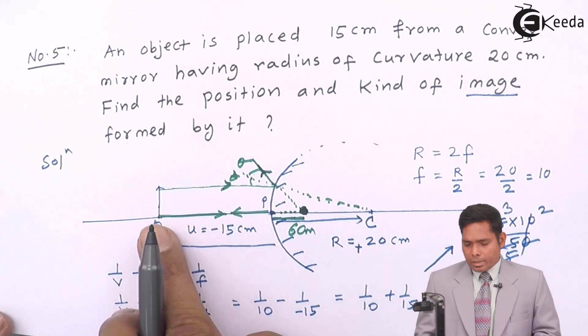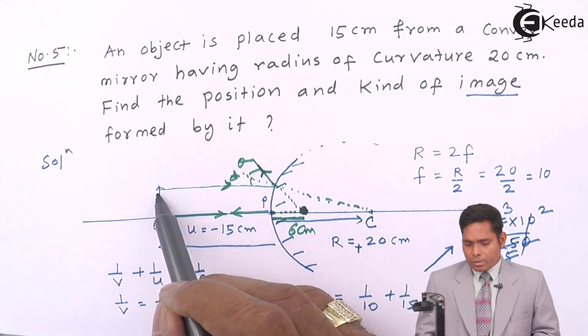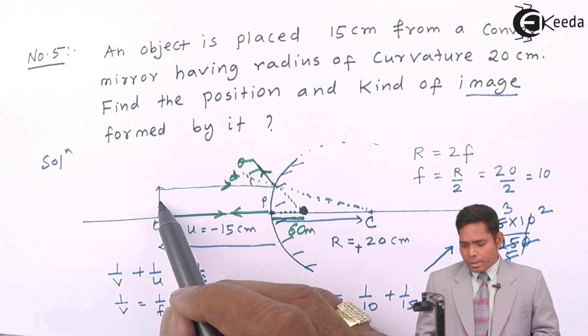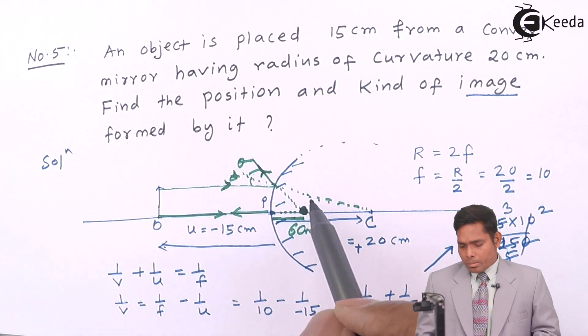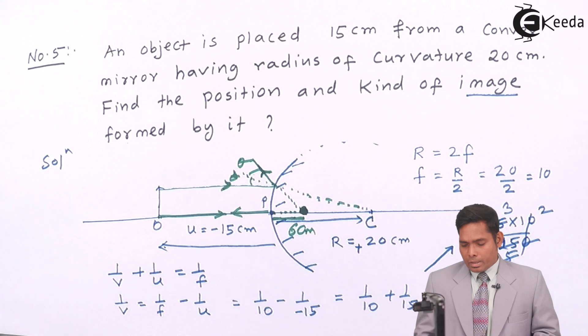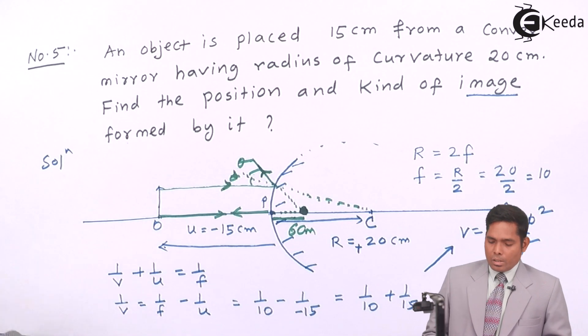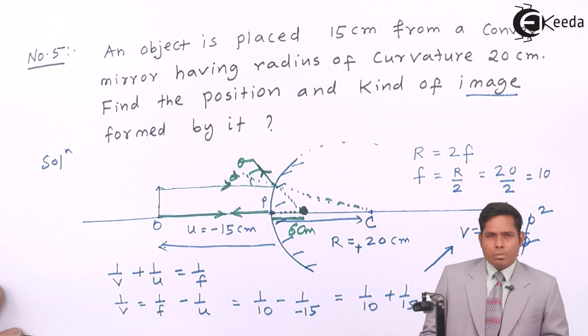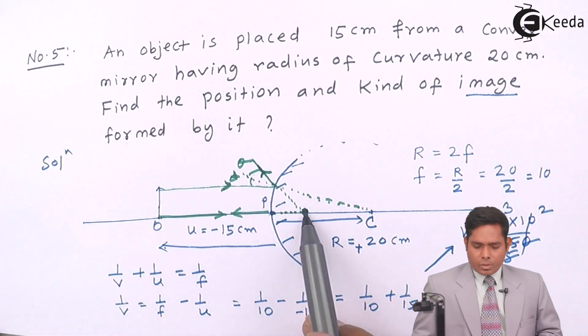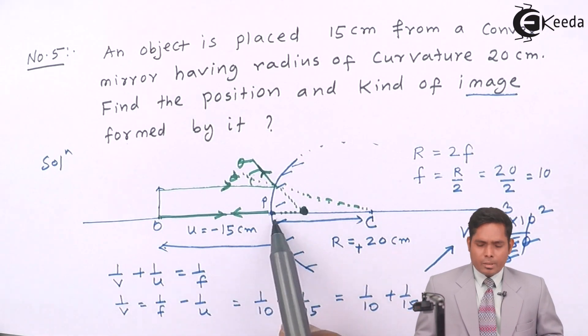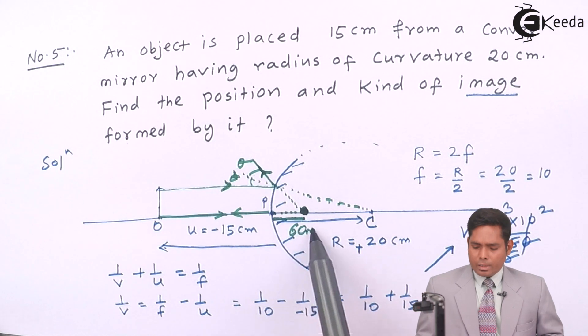If you extend that in the backward direction, it will meet here. You will have the image formed here. If I draw the image of this object, it will pass somewhere like that, somewhere here. You will get the image, and this distance is 6 cm.